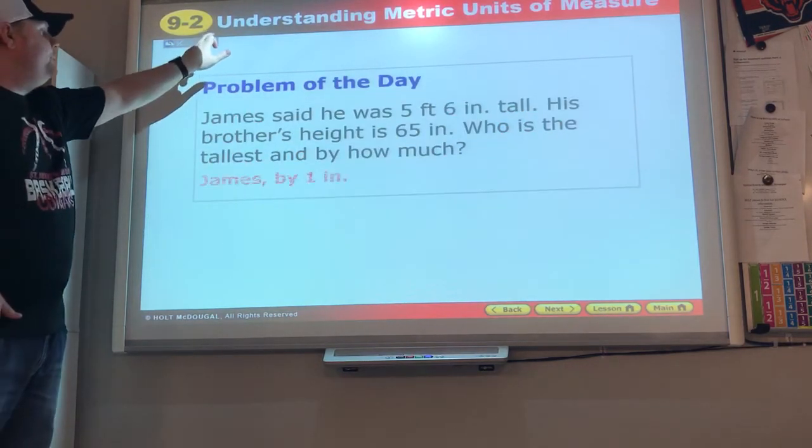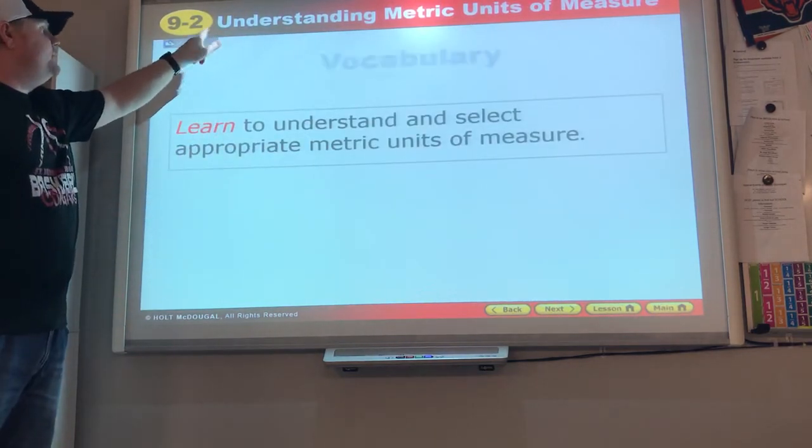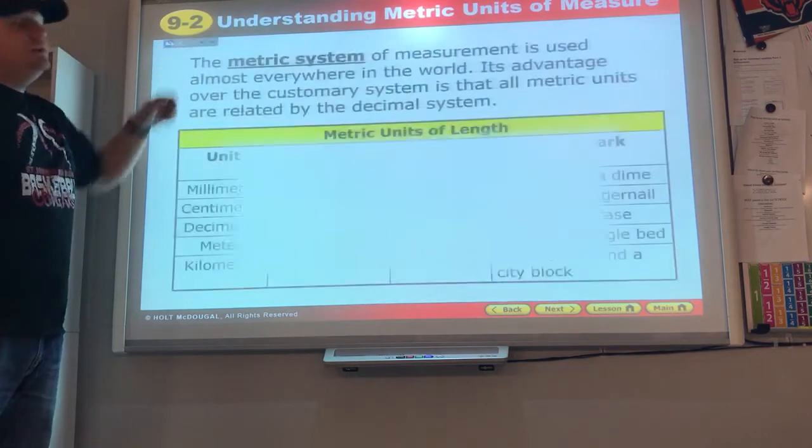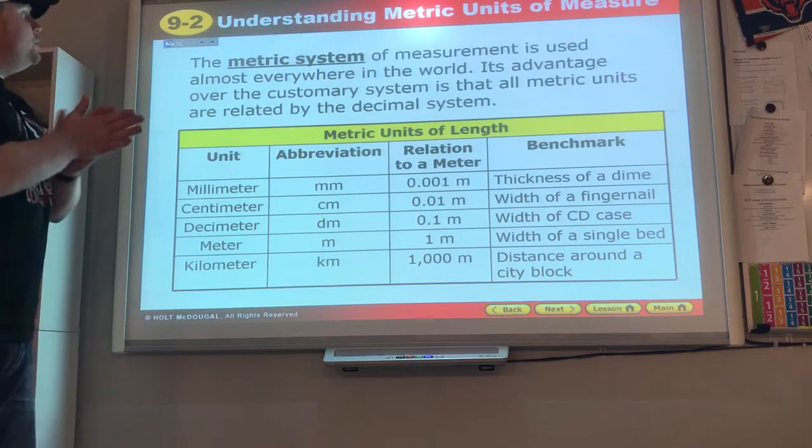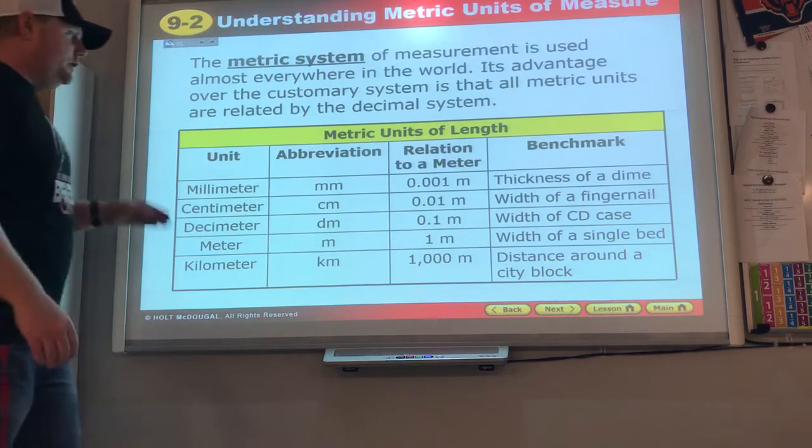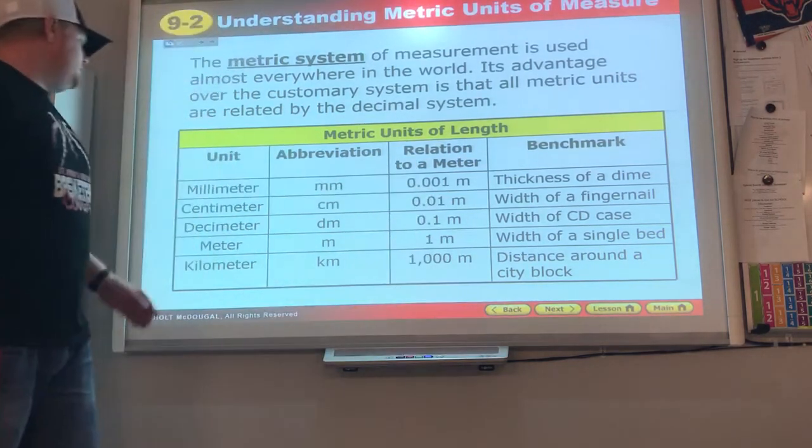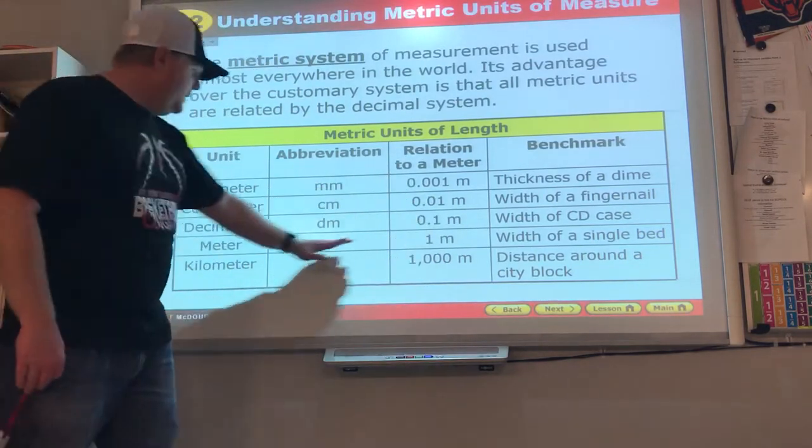Select the appropriate metric unit for measurement. The metric system is used in all countries but three. It's a measure used almost everywhere in the world. Its advantage over the customary system is that all metric units are related by the decimal system. They're all bigger by ten. Millimeter: one one-thousandth of a meter. Centimeter: one one-hundredth of a meter.